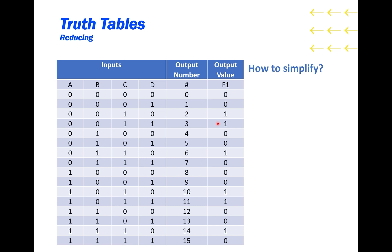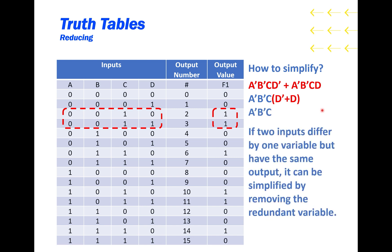How do you simplify? Notice that these two entries both output 1, but they differ only by one variable. The rest are the same. That gives us these two terms. But because they are almost the same, we can pull out the A'B'C. And notice that D' or D just simplifies to 1, so we can satisfy both outputs with just one term. In general, if two inputs differ by one variable but have the same output, it can be simplified by removing the redundant variable.